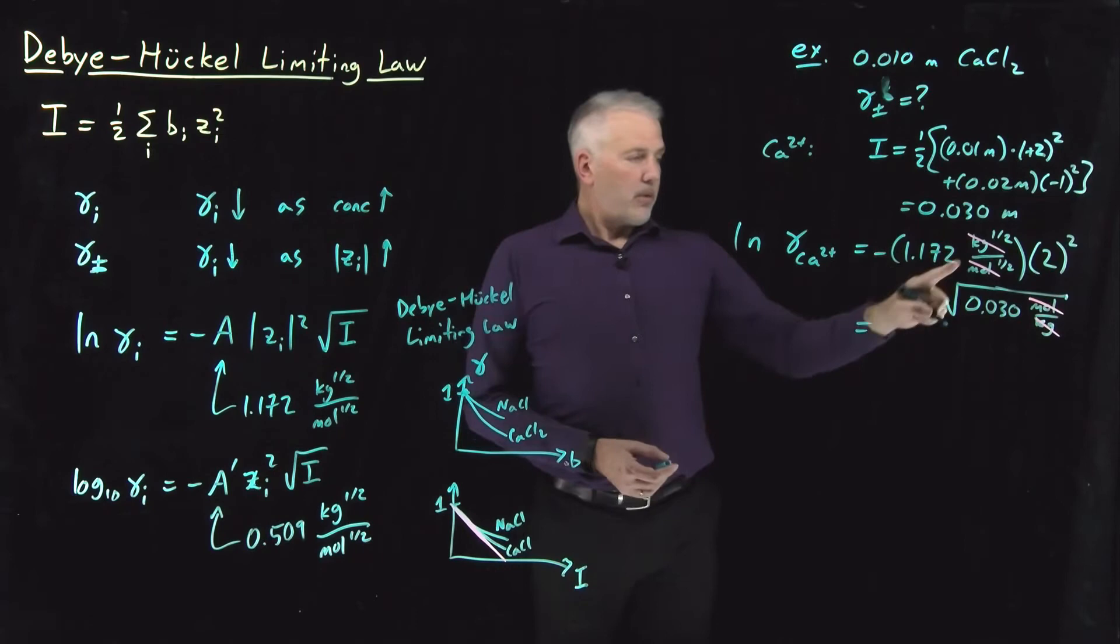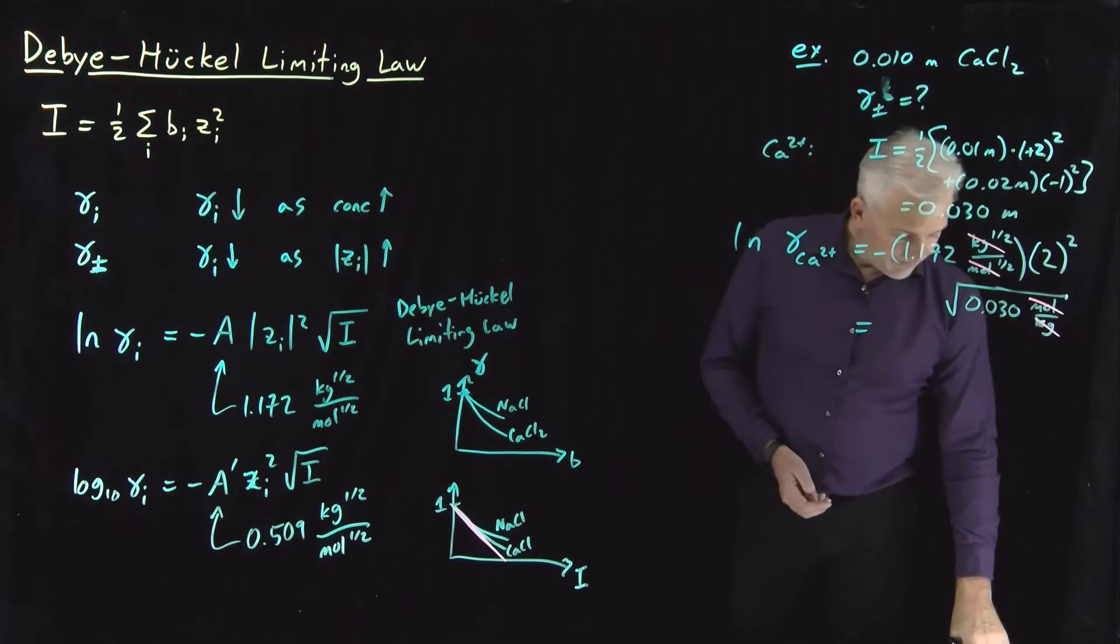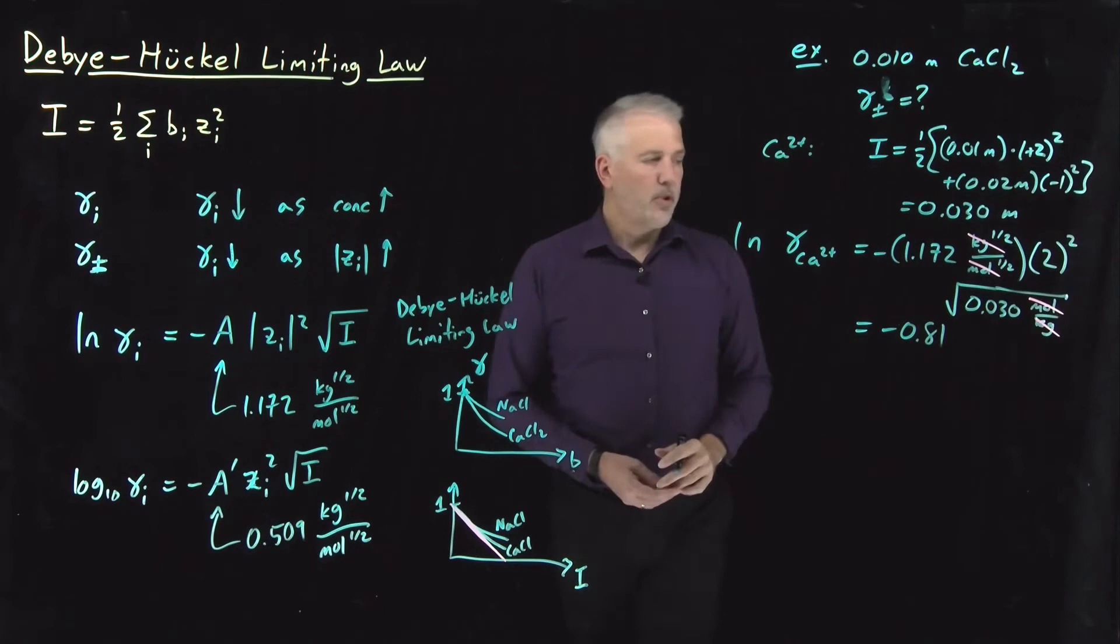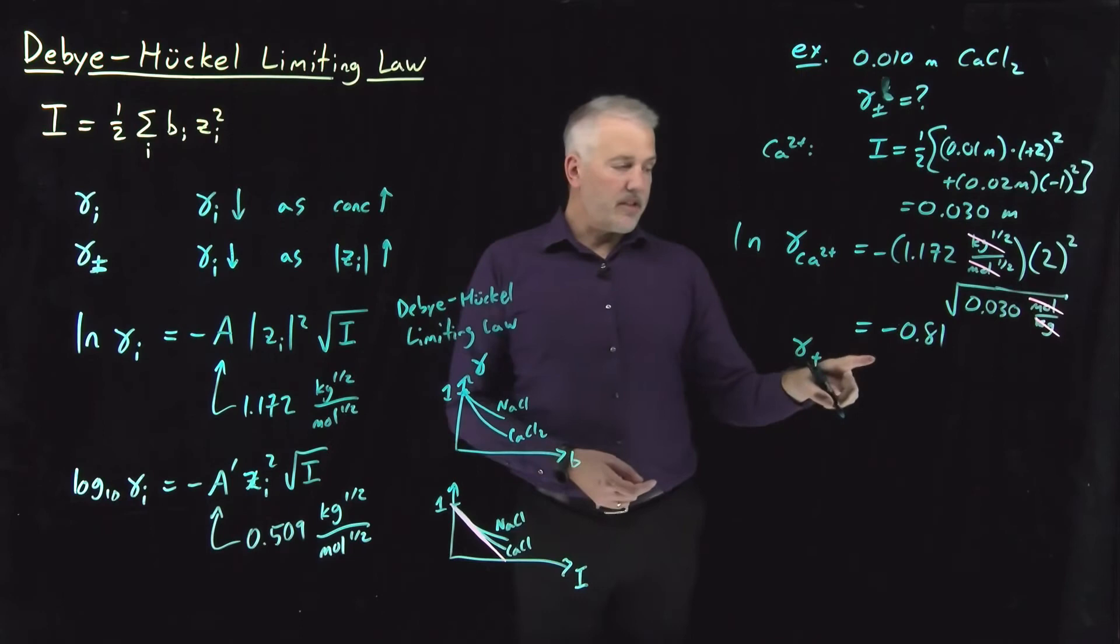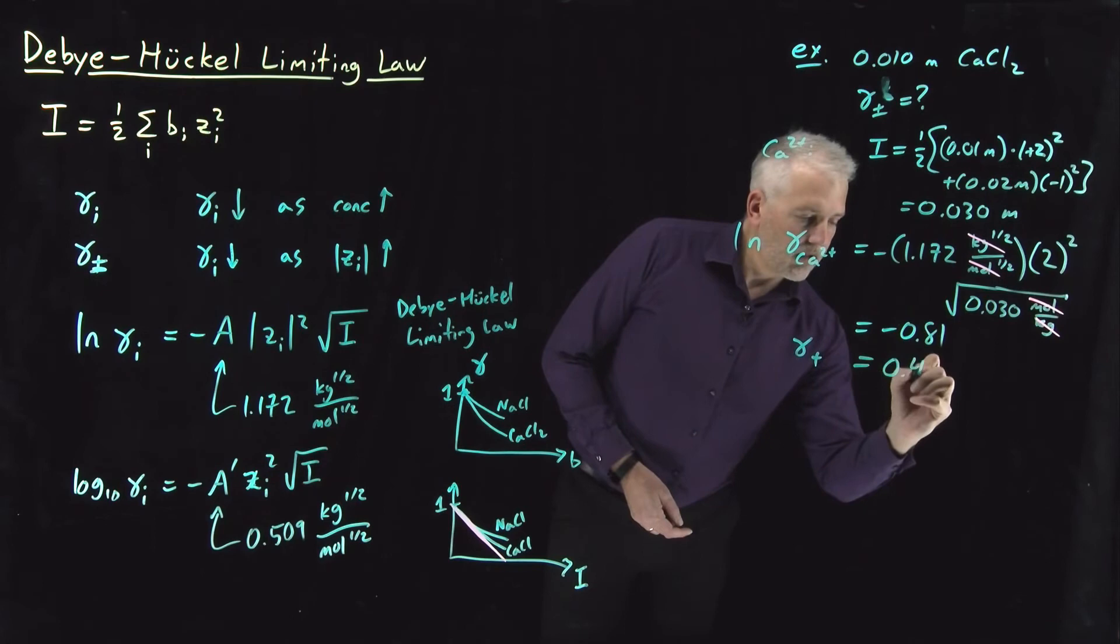And when I evaluate negative 1.172 times 4 times the square root of 0.03, it works out to be negative 0.81 unitless because all these units have canceled, which means after taking e to both sides, the activity coefficient for the cation is e to the negative 0.81, which is equal to 0.44.